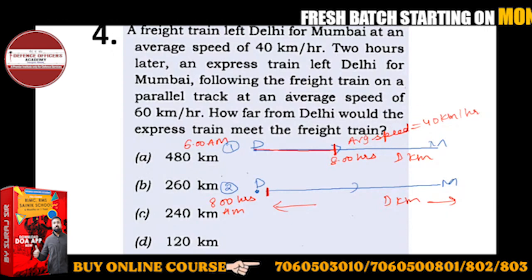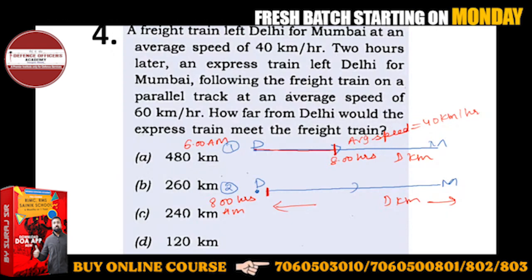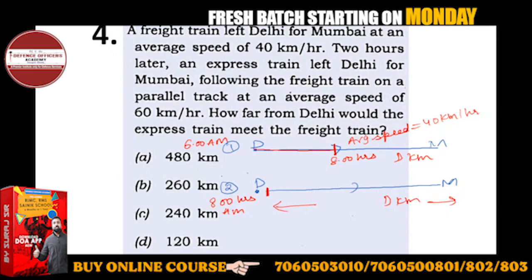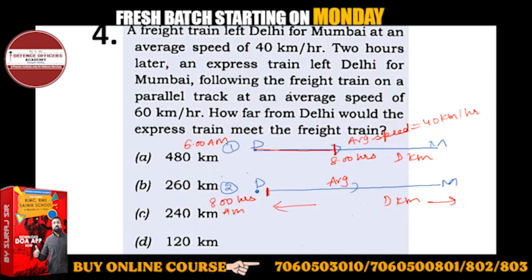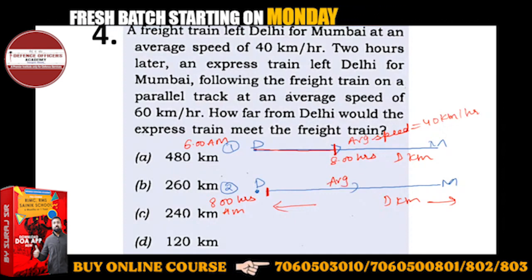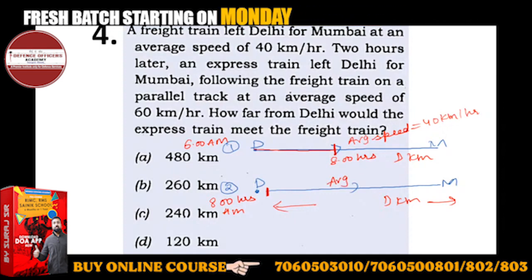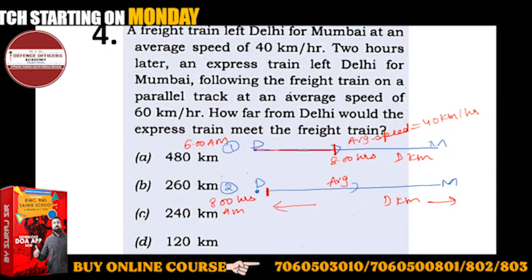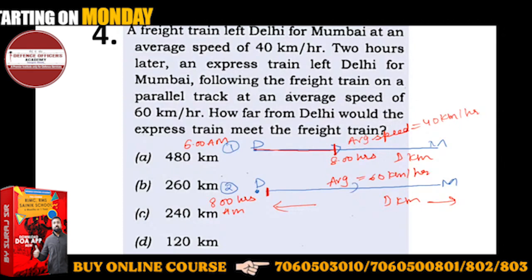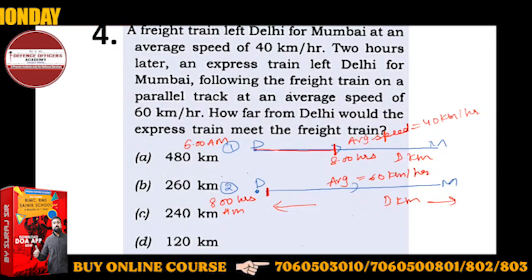The average speed of the express train is given as 60 km per hour. The question is: how far from Delhi would the express train meet the freight train?